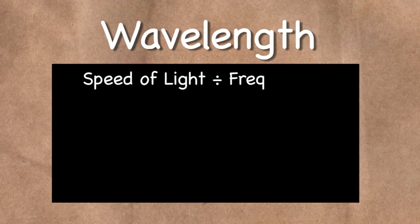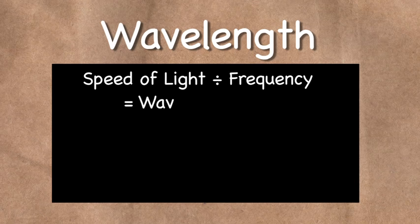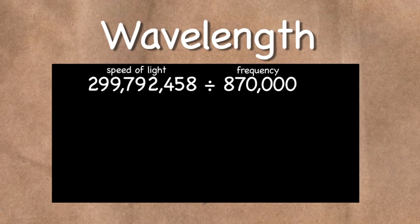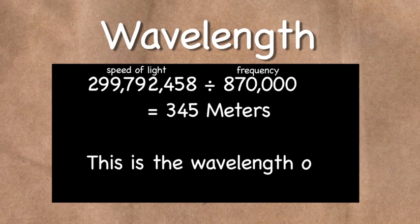Due to the fact that RF travels at the speed of light, or very close to it, the wavelength of a radio wave can be determined by dividing the speed of light by the frequency. As an example, an RF signal with a frequency of 870,000 hertz has a wavelength of 345 meters.